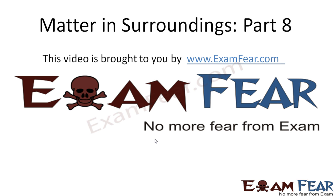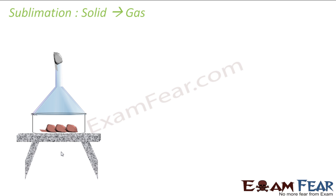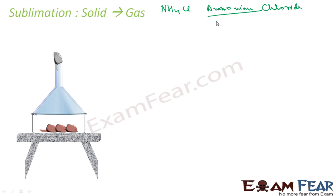This video on material surroundings part 8 is brought to you by examfa.com. Let's talk about a scenario where we directly convert from solid to gas — this process is called sublimation. A compound that does this is called a sublimate. For example, ammonium chloride (NH4Cl) directly converts from solid to gas and back to solid.